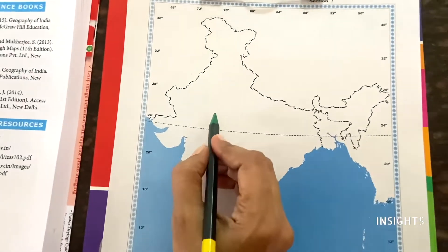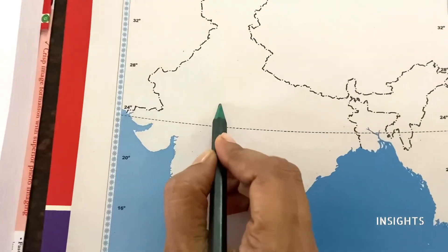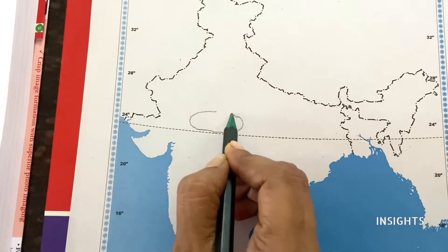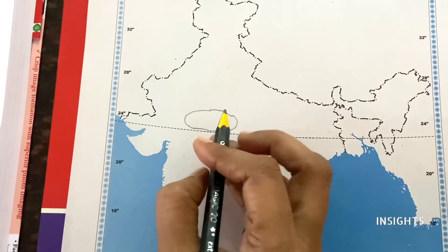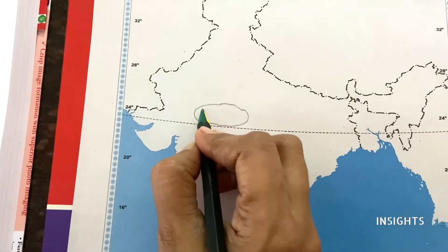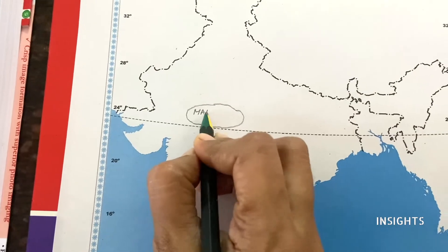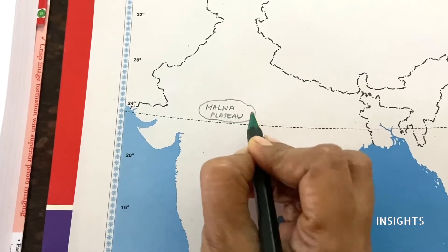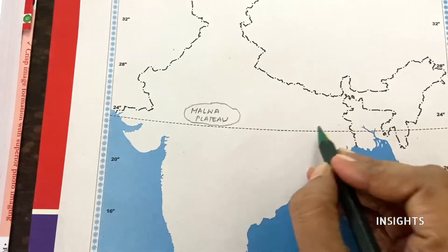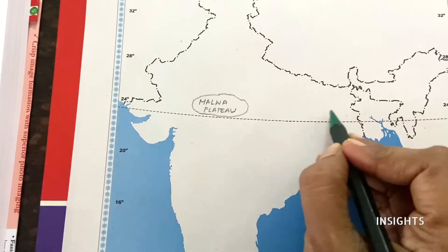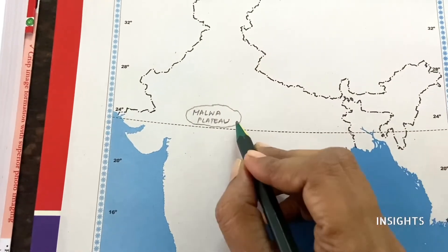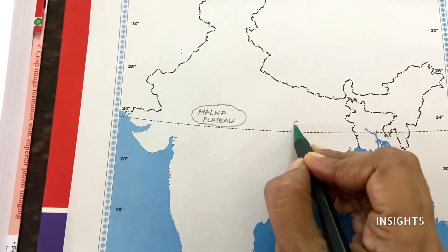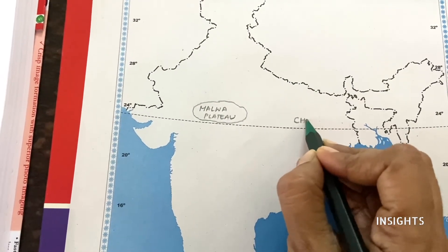Malwa Plateau location - you can just draw a circle like this, or you can just write it in that place. You can draw a circle like this. Chota Nagpur - you can draw a circle like this as well.